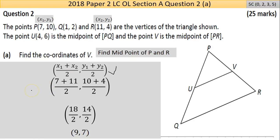I'm going to put the number where the letter is. Instead of x₁ I put 7, instead of x₂ I put 11, instead of y₁ I put 10, instead of y₂ I put 4. No need for brackets around the inputs because they're all positive.